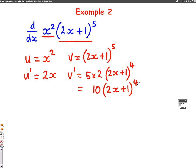Now we have our u, our v, our u dash, and our v dash. We just plug them into the formula for the product rule, which is u, v dash, add v, u dash.